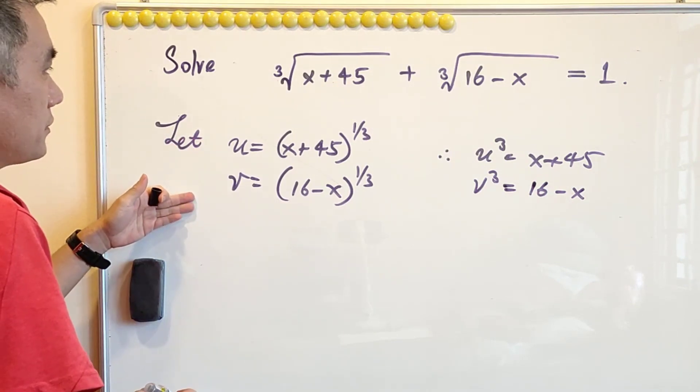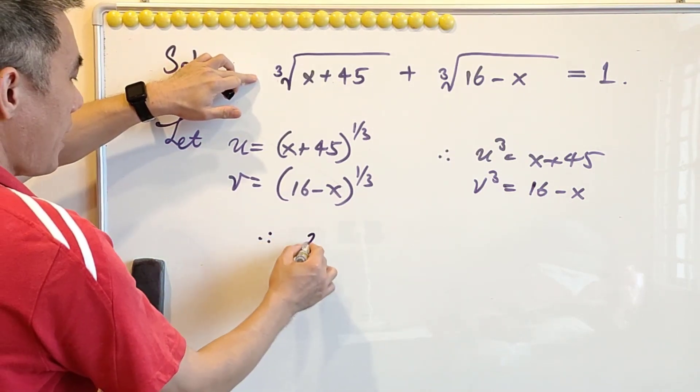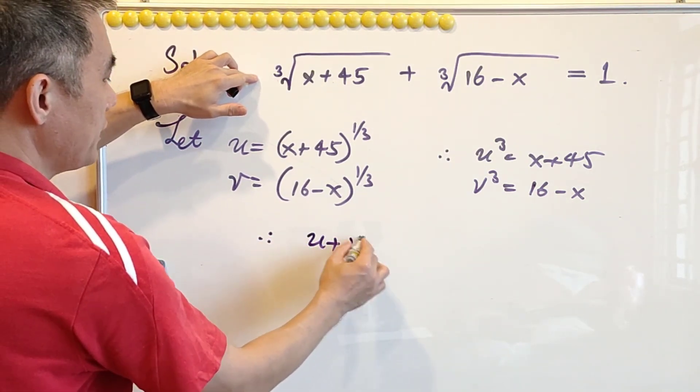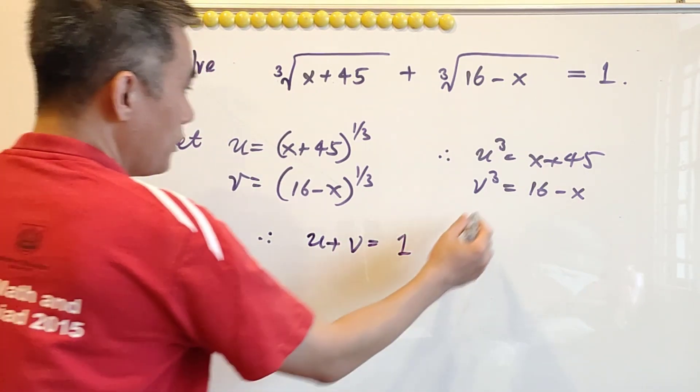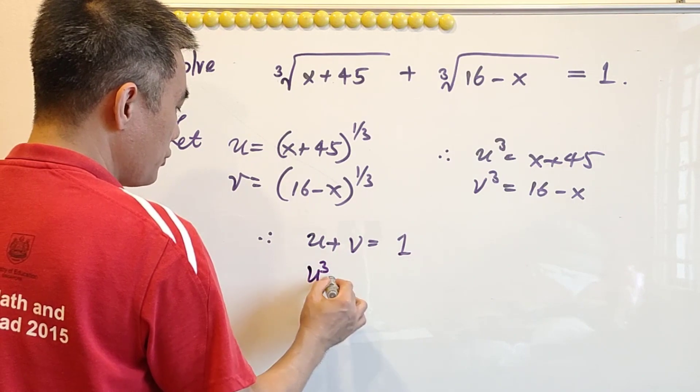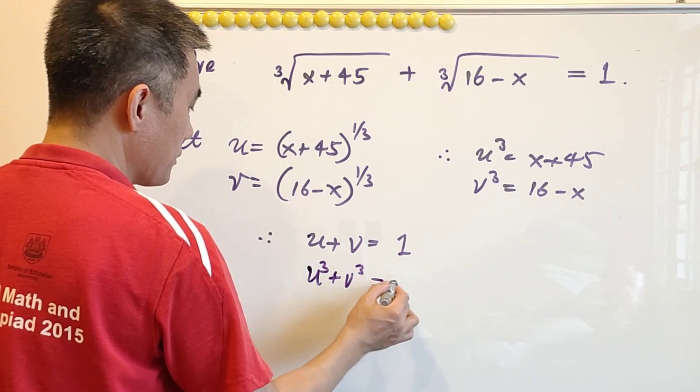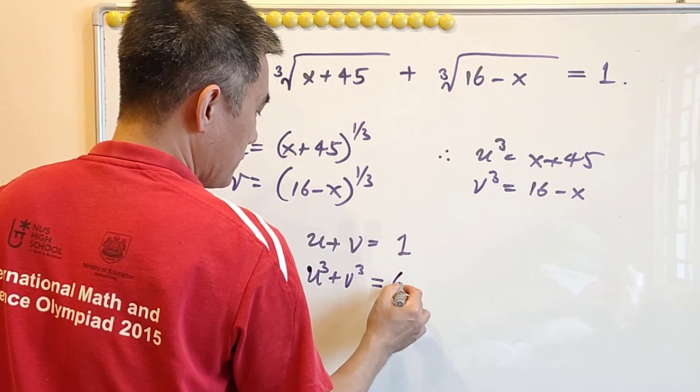So using this substitution, then we know that u plus v equals 1 and also u cube plus v cube equals to 61.